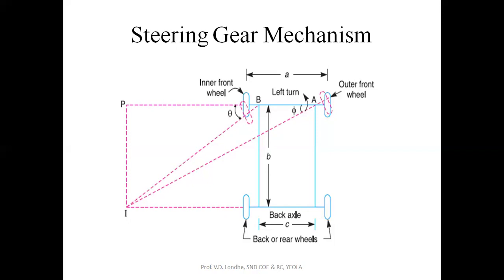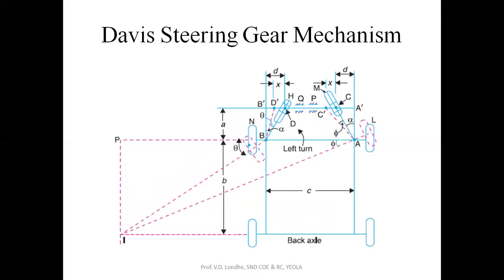Based on this principle, there are two types of steering gear mechanisms. The first is the Davis steering gear mechanism. This steering gear mechanism was developed by the scientist Davis, and so the name was given as the Davis steering gear mechanism.